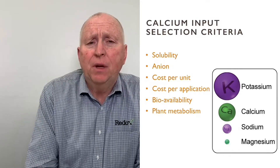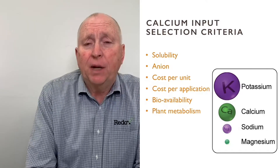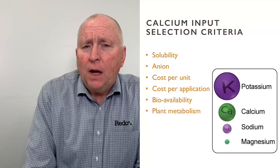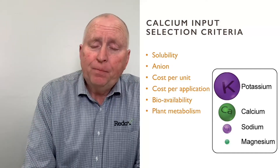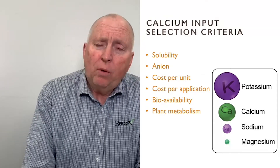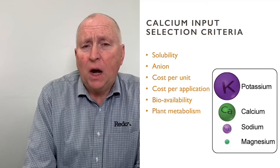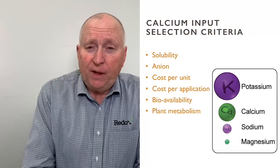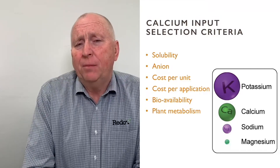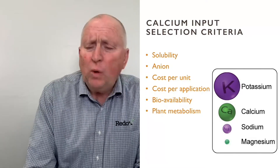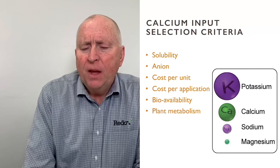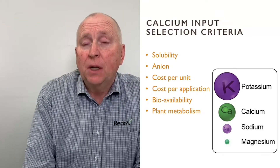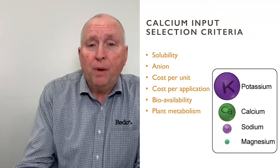The second factor is that calcium is going to come attached to some sort of anion — positive and negative charge together. The consideration is: what is the anion? Is it going to be beneficial or is it going to hurt — what's the net effect? The third is cost per unit, and more importantly, cost per application. The lowest cost per unit material may not be the lowest cost per application. The fifth consideration is bioavailability — how readily can we get that calcium into the plant? Last but not least, what's the relative impact on plant metabolism? With all of this, we want to go back to the soil test, because it will tell us if there's an opportunity to solubilize existing calcium in the soil or to complement with inputs.